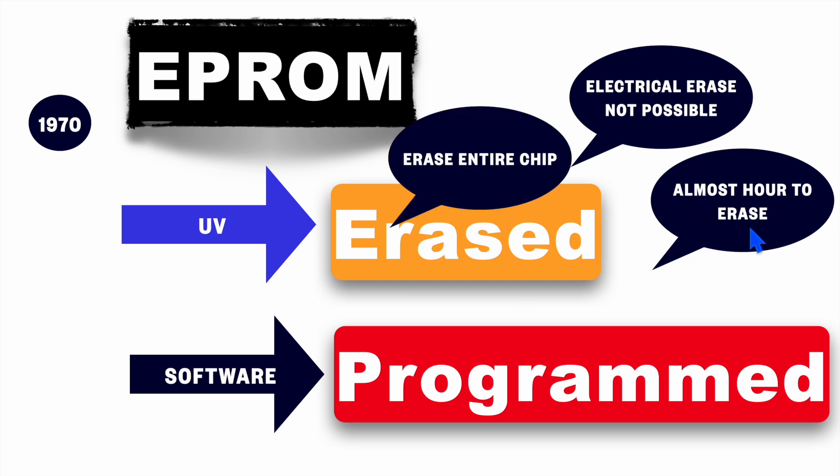And in this process, the entire chip will be erased. So it's not like you can erase a single byte with the help of this UV light. So these were the drawbacks of EPROM, erasable programmable ROM.